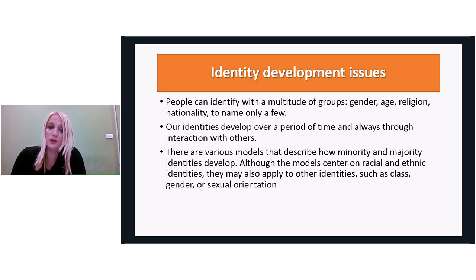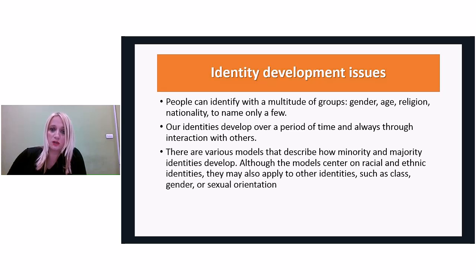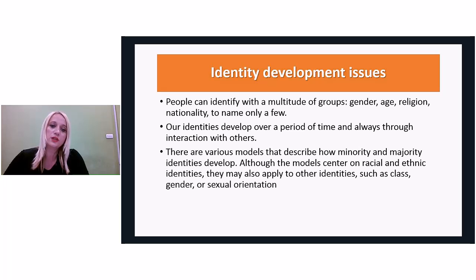Prejudice as well as stereotypes can be positive or negative. For example, if an individual says 'I don't want this group to live in my neighborhood,' that is expressing prejudice. The sources of prejudice include social and cognitive sources. Social sources refer to unequal status and social identity, while cognitive sources refer to stereotypes and perceived similarities or differences.